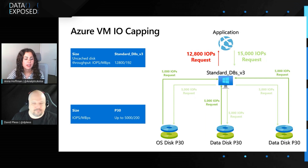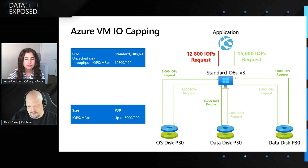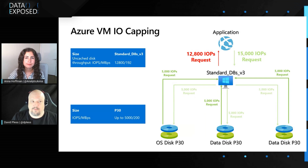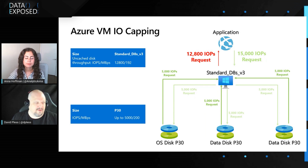Is it also possible to be capped at the throughput level? Yes, you definitely can. When we think of IOPS, I tend to think of OLTP applications. If you have a data warehouse or heavy reporting environment, we tend to worry more about throughput. Most workloads are mixed. The examples we're showing here are IOPS, but you can also be limited at the throughput level as well.